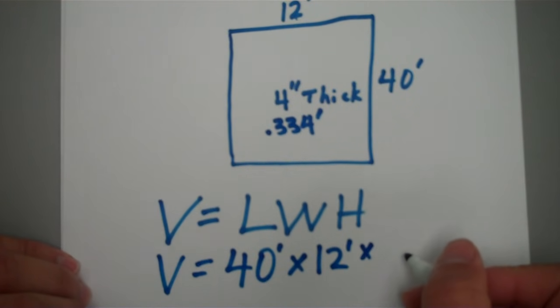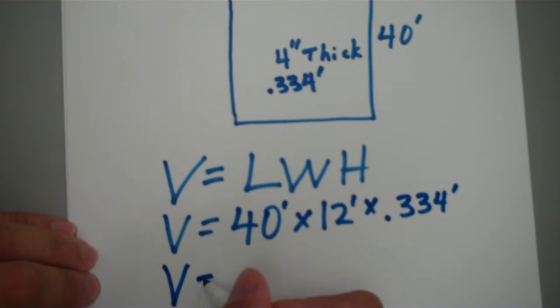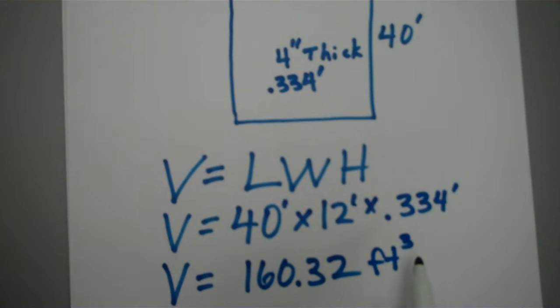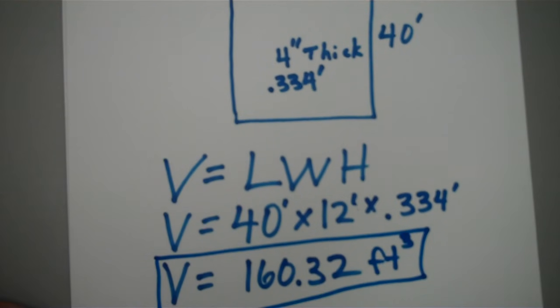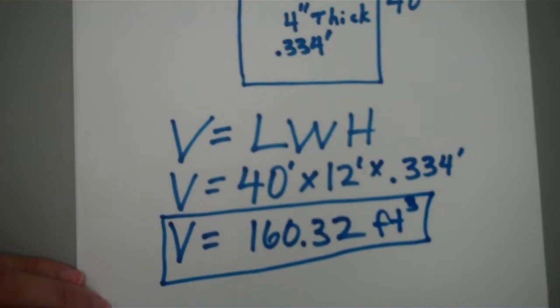Just work out the equation folks: 40 times 12 times 0.334. It is 160.32, and don't forget your units. You got feet times feet times feet, which would be feet cubed. That's volume. Remember volume is a 3-axis way of figuring, so it has to be cubed. Surface area, if you're finding square footage, would be a 2-axis. It'd be feet squared.